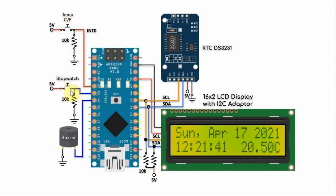We have another push button connected to D3, which is used to start the stopwatch; pressing the button again will stop the stopwatch and take us back to the real-time clock. Finally, we have a buzzer connected to D4 which will chime every hour of the real-time clock.